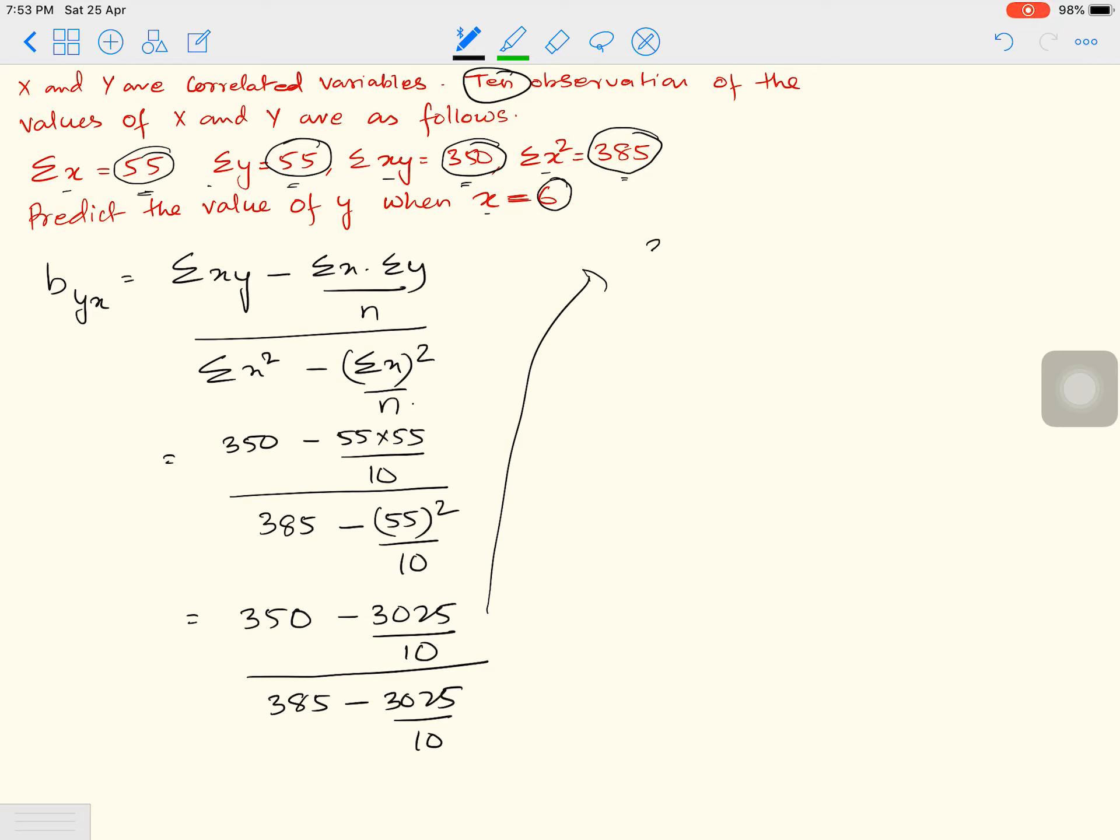So I have 350 minus 302.5 divided by 385 minus 302.5. That would give me 47.5 divided by 82.5. And when you divide it using the calculator, you'll get 0.5757. I'll round it up to two decimals. That will be 0.58. So that is BYX.